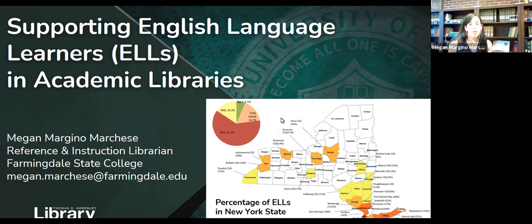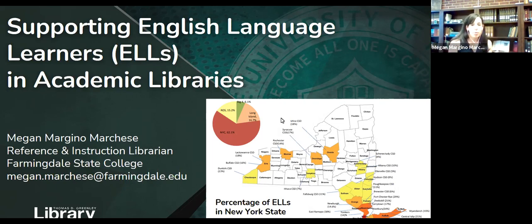Even though these students might not have a designation of ENL or ESL anymore, they might still benefit from certain methods of teaching and communicating that we can implement in libraries. I want to talk a bit about the characteristics of ELLs so we can understand how to best work with this group of students. Some of these points might be obvious to you, but I want to start with the basics by pointing out some commonly held misconceptions about ELLs.